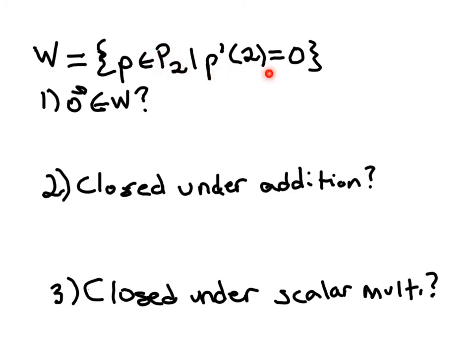Specifically the ones that have a derivative of 0 when we plug in 2. So if we have a subset of a vector space, if we can just show that that subset meets these three criteria, then that's enough to prove that it's a subspace of the vector space.